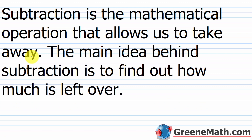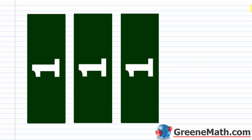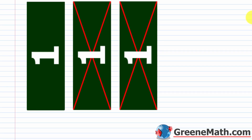So what is subtraction? Subtraction is the mathematical operation that allows us to take away. The main idea behind subtraction is to find out how much is left over. Suppose you have three $1 bills, and you go to a fast food chain, and you spend $2 of your $3 on a hamburger. How much would you have left? You can picture these three $1 bills with two crossed out. Well, you just have one left.